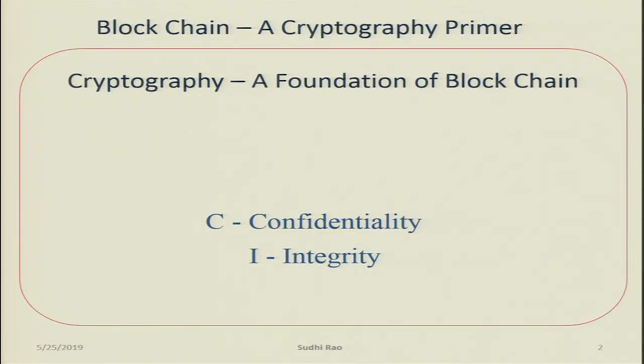The second part is integrity. Integrity has many meanings, but in the context of information security, integrity means any change to information — any modification, any addition — can only be done by authorized persons. No unauthorized changes are allowed, and whenever any change has been done, we should be able to trace who made the change, when, and why if possible.